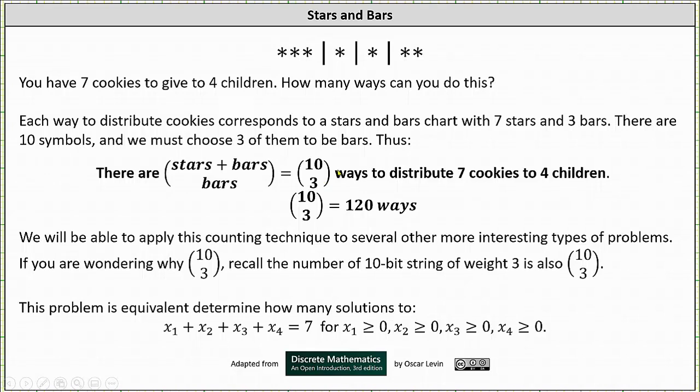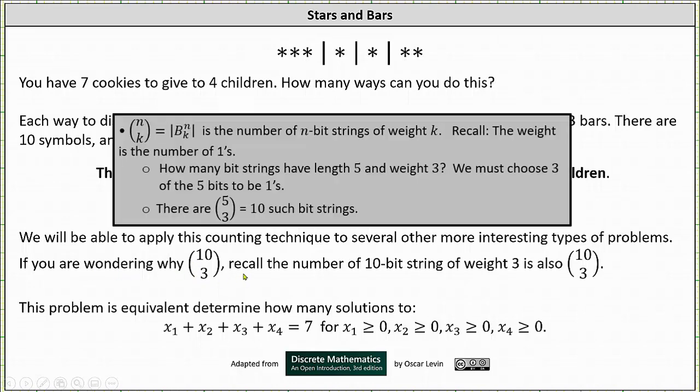Notice how 10 choose 3 is formed by stars plus bars choose bars. But also remember this is equivalent to stars plus bars choose stars. We will be able to apply this counting technique to several other interesting types of problems. If you are wondering why 10 choose 3, recall the number of 10 bit strings of weight 3 is 10 choose 3.